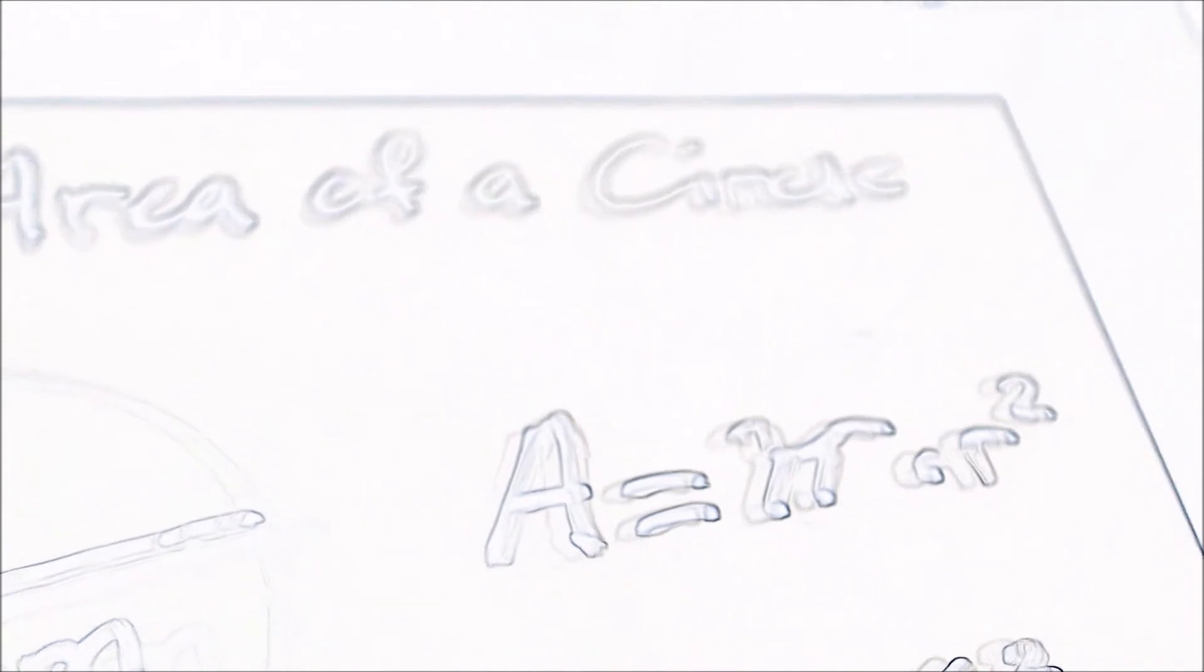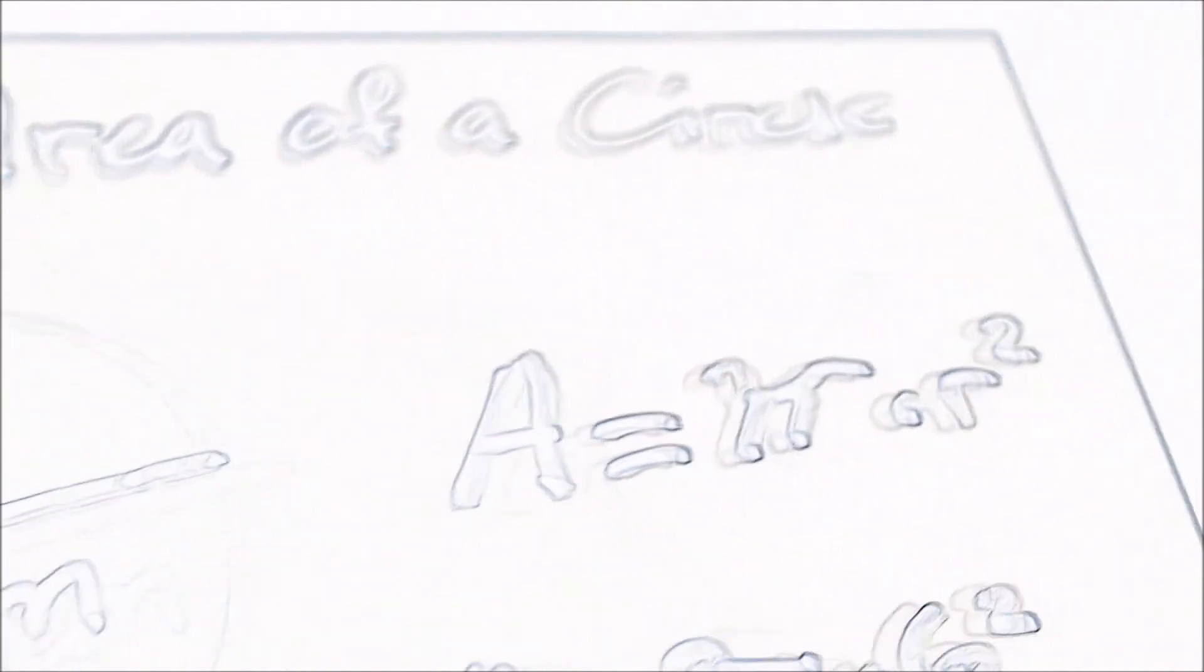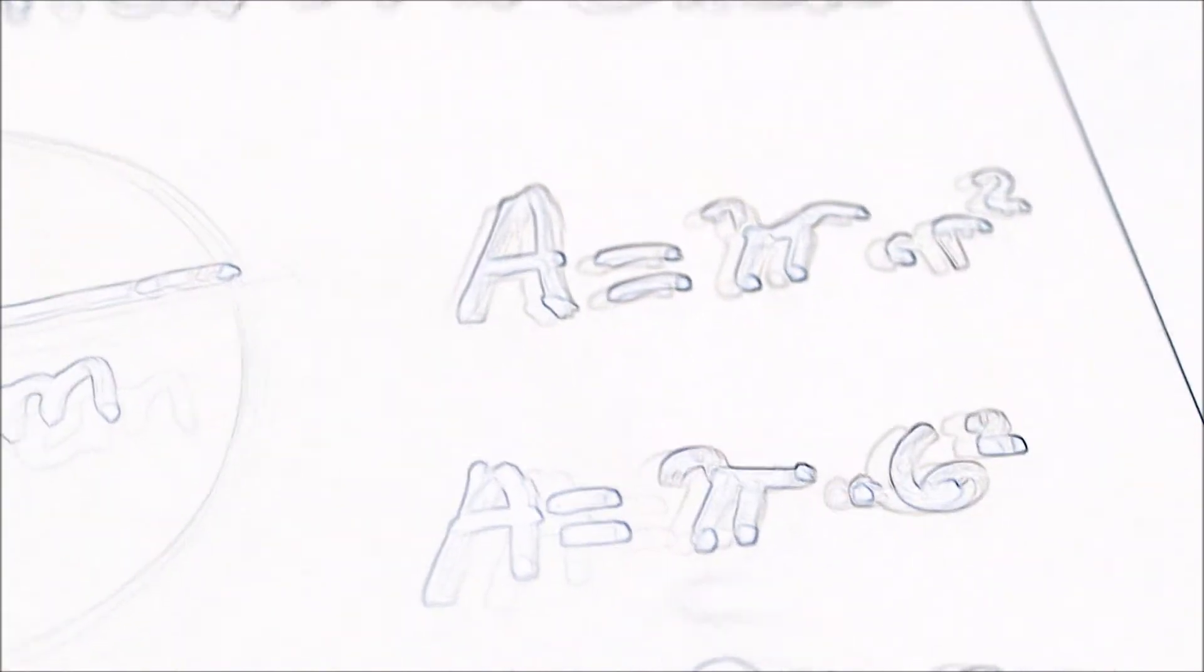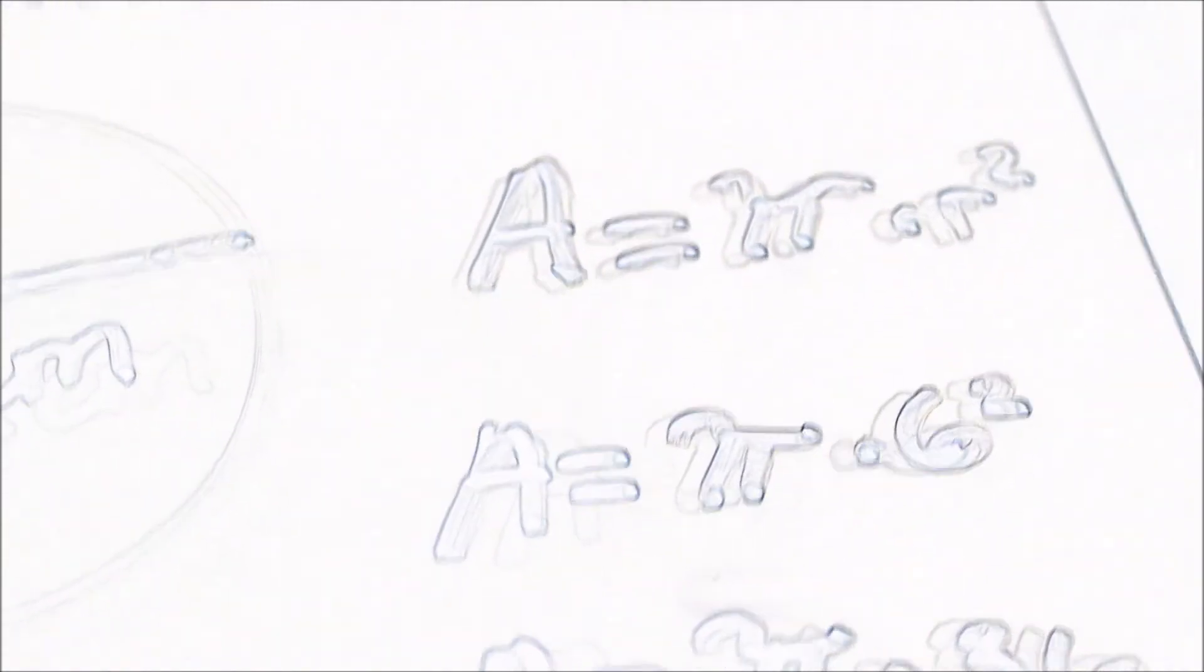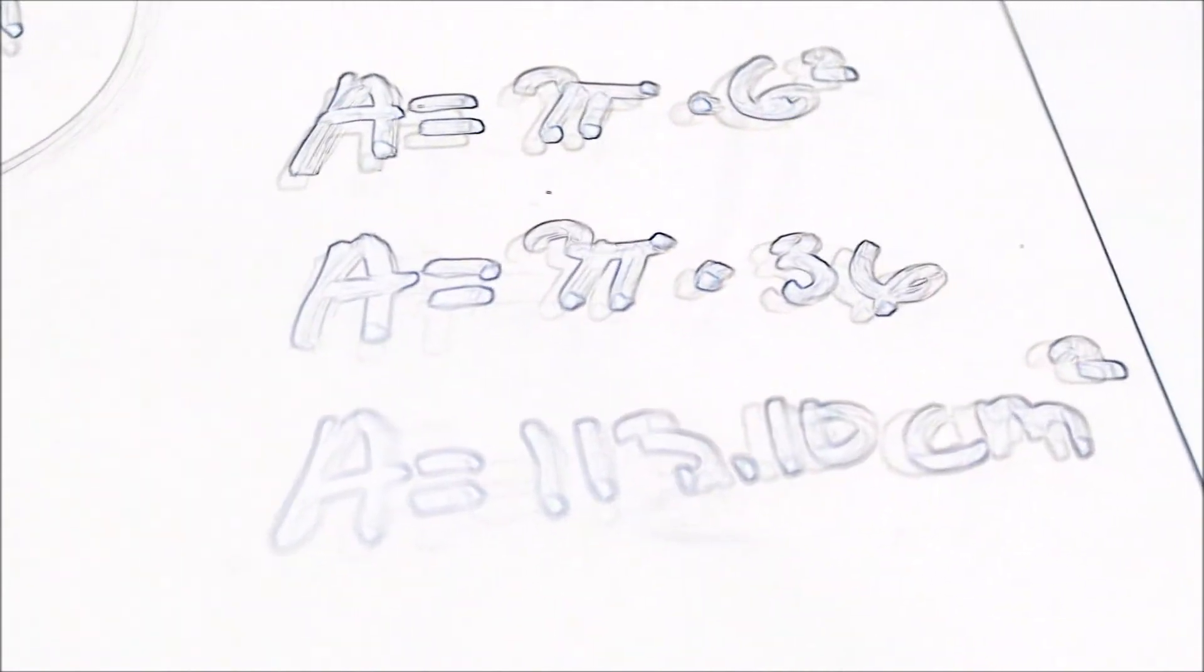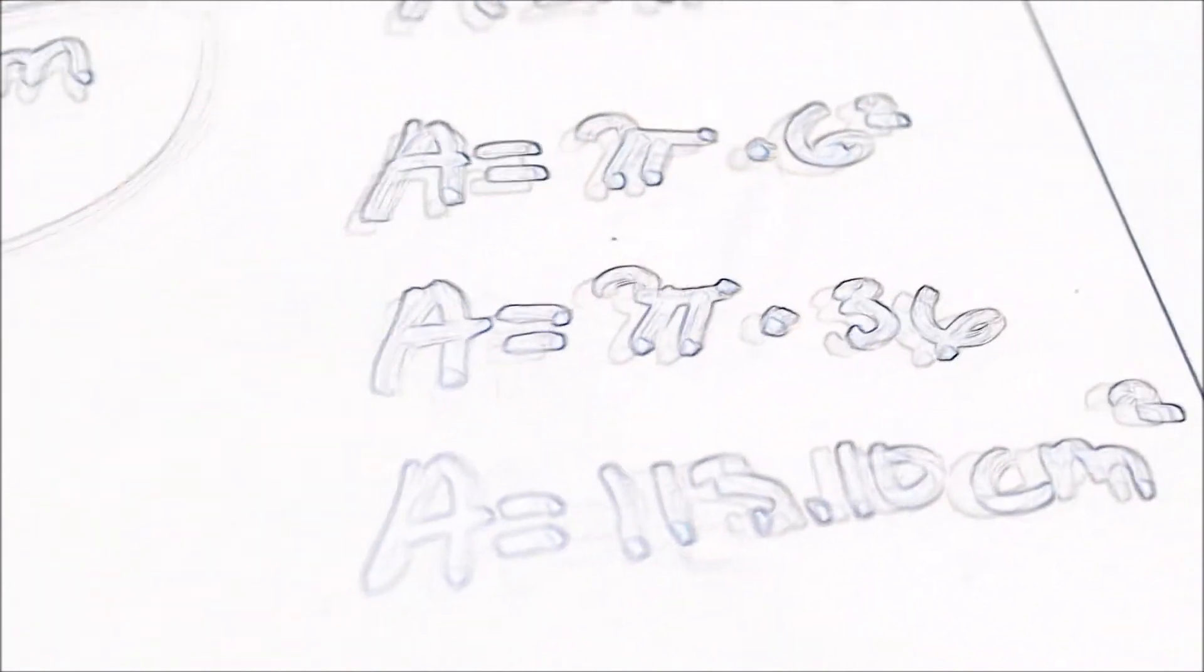So the formula we are going to use is pi times r to the second. So it would be A equals pi times 6 to the second. From 6 to the second equals 36. So we times it by pi and we will get 113.10 cm squared.